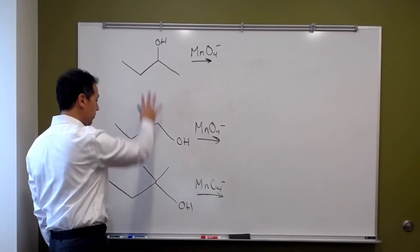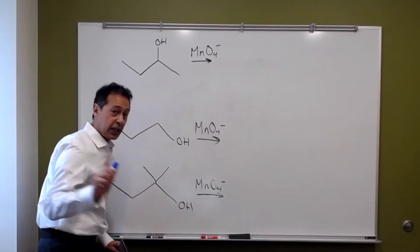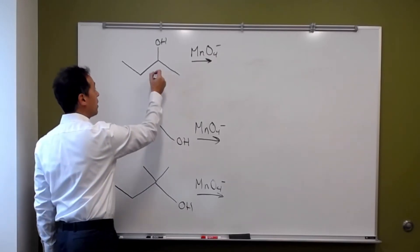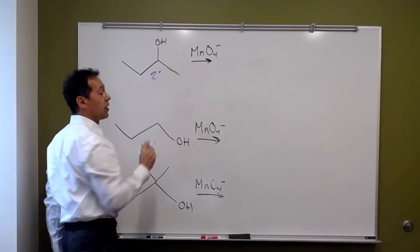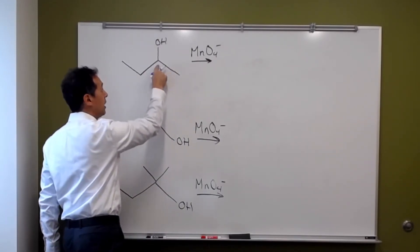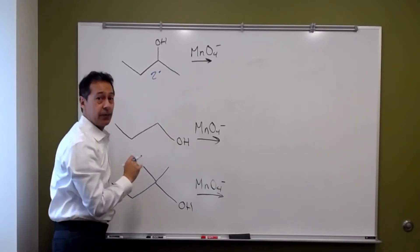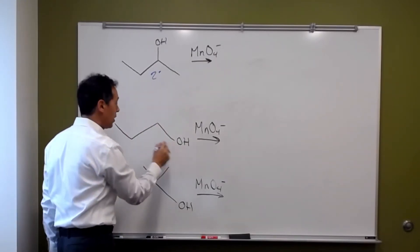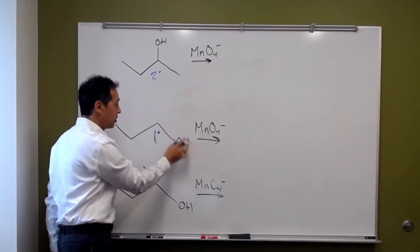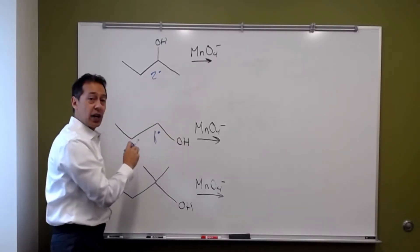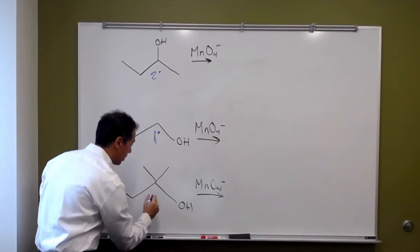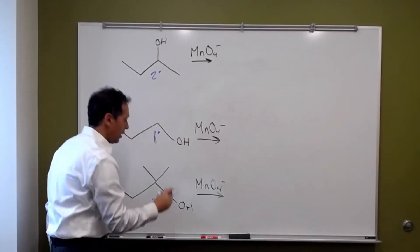We've got different types of alcohols here. This first one is a secondary alcohol — it's secondary because the OH group, the hydroxyl group, is attached to a carbon that has carbons on either side. This one is a primary alcohol, because the hydroxyl group is attached to a carbon that has one other carbon attached to it. And this one is a tertiary alcohol.